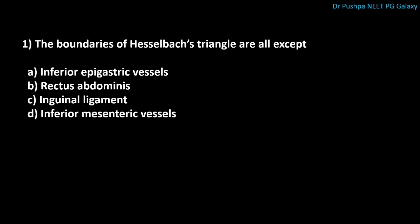The first question is: the boundaries of Hesselbach's triangle are all except. Option A: inferior epigastric vessels. Option B: rectus abdominis. Option C: inguinal ligament. Option D: inferior mesenteric vessels. The correct answer is inferior mesenteric vessels, because Hesselbach's triangle is formed by the rectus sheath medially, inferior epigastric vessels laterally, and below by the inguinal ligament.